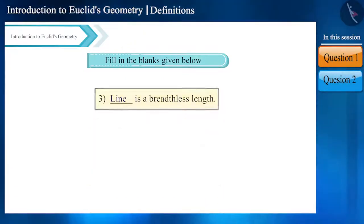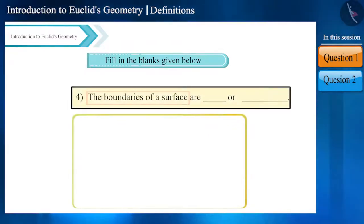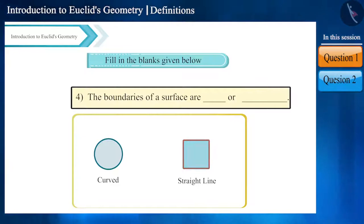Look at the fourth and the last blank. Here, we are talking about surface boundaries. The boundaries of a surface are either curved or a straight line. Therefore, the answer for the first blank will be curved and for the second blank, it will be straight line.